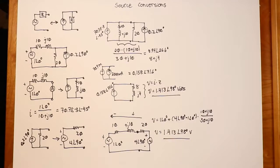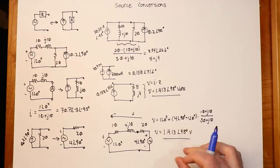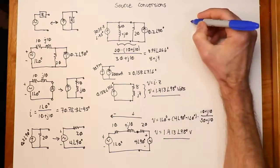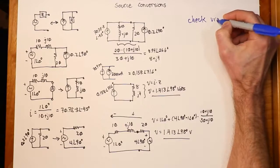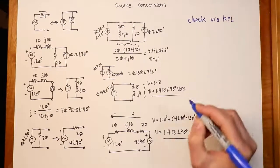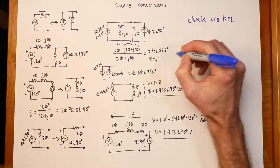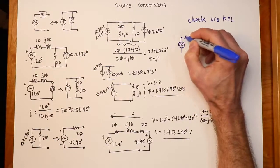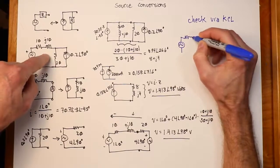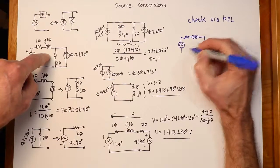Just to cross-check this — if you're a paranoid sort of person and you think, well, do those two things equal the original circuit? We can just take this voltage and go back and do a check via Kirchhoff — do a KCL check. Looking at that piece of it from the original circuit: here's my 1 at an angle of 0, the 20 ohm, the current source, and the 10 plus j10.